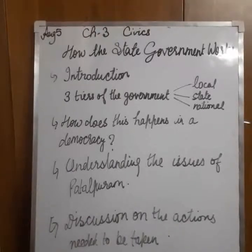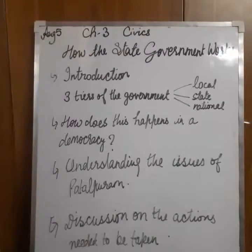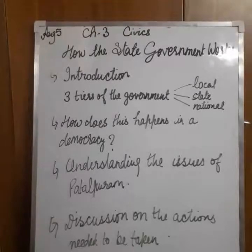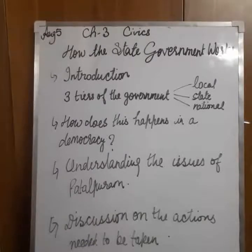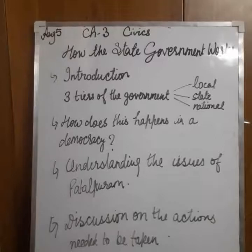After the election, it is the Governor of the state who appoints the Chief Minister and the other ministers. This paragraph is very important because it discusses the selection of the CM and other members. The Governor of the state appoints the Chief Minister and other ministers. The CM comes from the winning or ruling party, and the Chief Minister then chooses the MLAs from his party to serve as ministers.